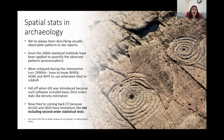Okay so let's start with an overview of spatial stats in archaeology. We've always been describing visually observable patterns in site reports but since the 1960s and processualism, statistical methods started being applied to objectively quantify observed patterns. Statistics were critiqued during the interpretive turn with post-processualism and post-modernism, and that was probably right because you have to know when, how and why to use each statistic, otherwise they can give false results.